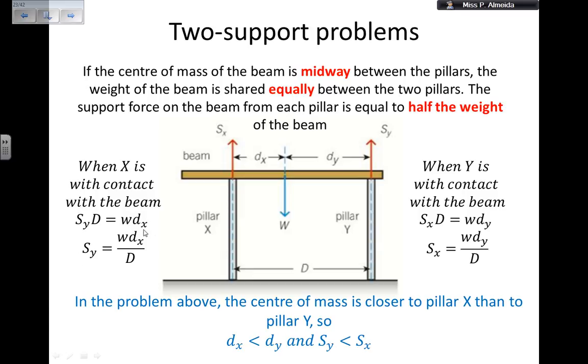Now I'm resolving it for the support in Y. So SY equals the weight times the distance in X, DX, divided by the distance between the pillars. The same way, I can figure out what the support in X must be. When Y is in contact with the beam, here I have Y, then SX times the distance, so this force times that distance, needs to be equal to this force that is trying to make it go down times that distance. That means that SX is the weight times DY divided by big D, which is the distance between the two pillars.